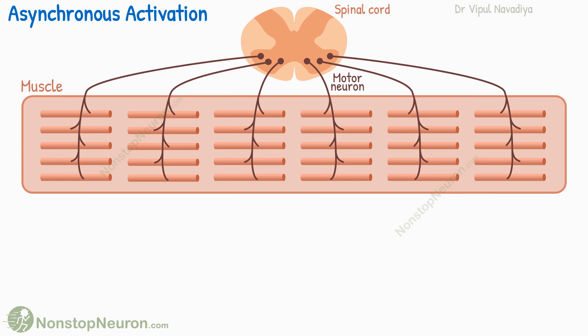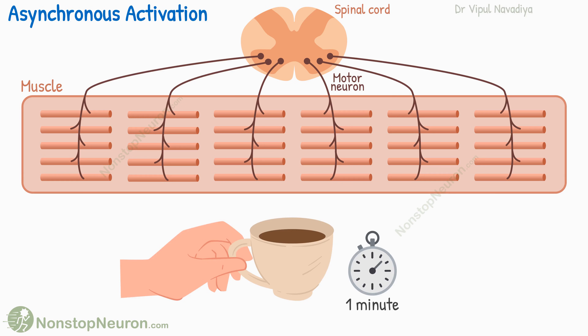The second interesting thing to know about multiple fiber summation is the asynchronous activation of motor units. In this diagram, I am showing different motor units of similar size. Now let's say you want to hold a cup of coffee for a minute. To generate the force needed for that, activation of three motor units is needed. The same three motor units do not remain contracted for the entire one minute — the motor units keep alternating with each other. So at any given time, some units are generating tension and others are relaxing. This alternation is so smooth that the whole muscle force is maintained relatively constant throughout the contraction.